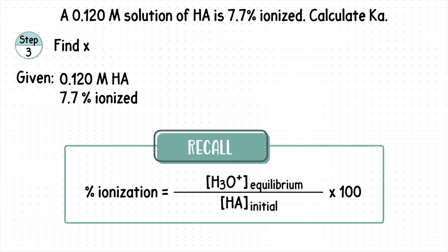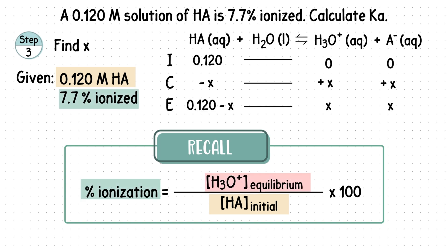The percent ionization formula is the concentration of the ionized acid, which is the hydronium ion at equilibrium, divided by the initial acid concentration, all multiplied by 100. Notice we already have the initial acid concentration and the percent ionization, so we can find the hydronium ion at equilibrium.